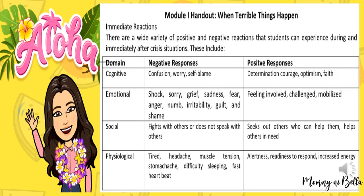Module 1 Handout — When Terrible Things Happen: Intermediate Reactions. There are a wide variety of positive and negative reactions that students can experience during and immediately after crisis situations. These include 4 domains, each with negative and positive responses. The first domain is cognitive. Negative responses include confusion, worry, and self-blame. Positive responses include determination, courage, optimism, and faith.